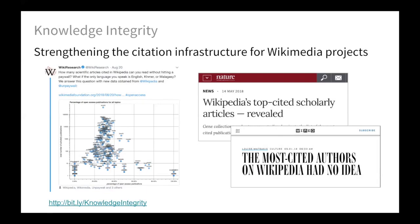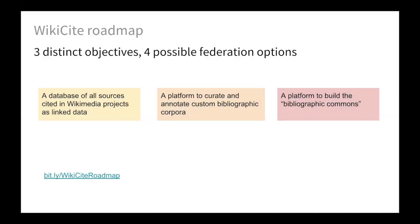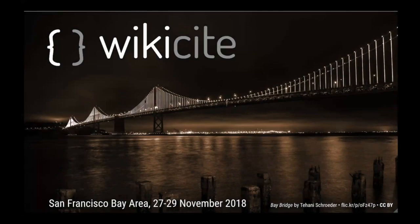Where is this going? To wrap up, we have a parent initiative at the Wikimedia Foundation called Knowledge Integrity, which is trying to build the citation foundation and infrastructure for open knowledge in Wikidata projects. We've been doing a bunch of open data releases recently in that direction. We have a roadmap discussion underway trying to figure out exactly what we're building and who for — whether that's a database of sources for Wikipedia, a platform for custom bibliographic corpora, or something closer to bibliographic commons. We haven't figured it out yet and could use some help. Finally, WikiCite is also an annual conference, and the next one is going to be in the Bay Area, here in Berkeley, between the 27th and 29th of November — the application form should go live today. Thank you, that's all for me.